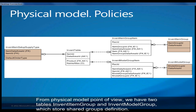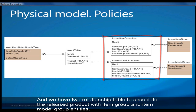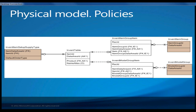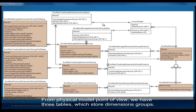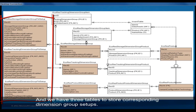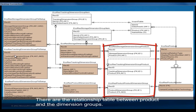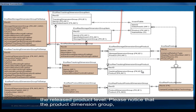From a physical model point of view, we have two tables: an item group and an inventory model group. We have two relationship tables in between to associate the released product, which stores the InventTable entry, with the item group or InventModelGroup. As you can also see, we have a dedicated entity to hold all default order types per each released product. Regarding dimension groups, we have three tables which store dimension group identifications, a table to store the corresponding setups, a relationship table between the product and the dimension group, and also a relationship table so we can overwrite or decide which group to use at the released product level.